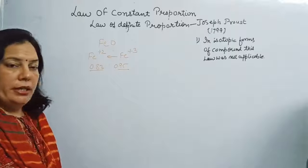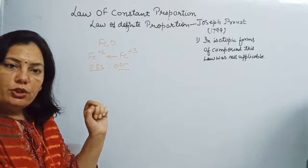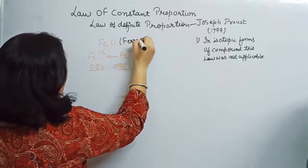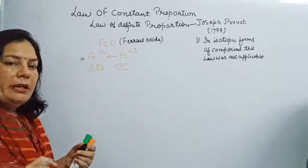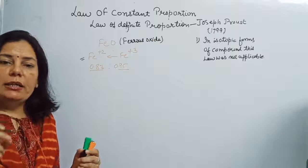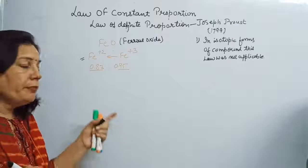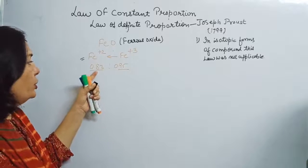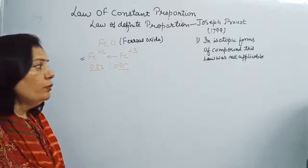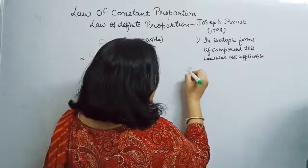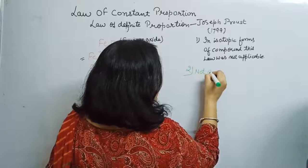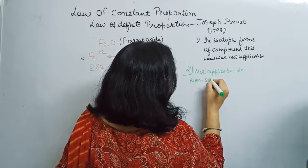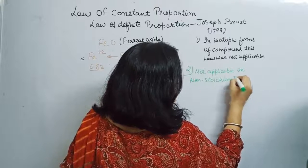In non-stoichiometric compounds like FeO (ferrous oxide), according to the name the valency of iron should be 2. But sometimes some of the Fe2+ ions are replaced by Fe3+ ions. When this happens, the ratio gets disturbed — instead of being 1:1, it becomes 0.83:0.95. So this law is not applicable to non-stoichiometric compounds.